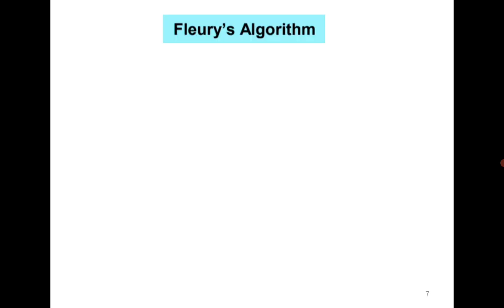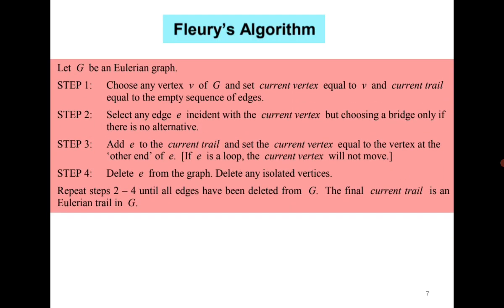This algorithm is known as Fleury's algorithm: start with any vertex, set it as the current vertex, and traverse edges one by one. The only condition is that you should choose a bridge only if there is no alternative. Keep deleting the traversed edge from the graph and also delete isolated vertices. In the end you will have the required Euler circuit.